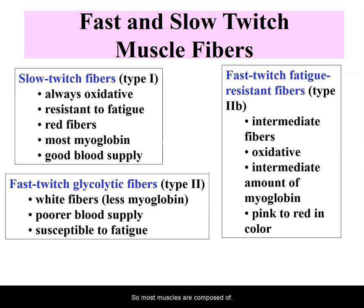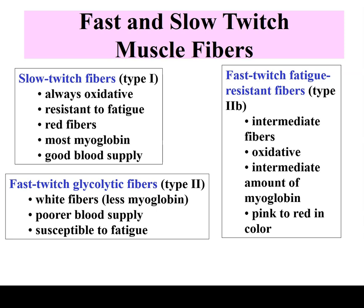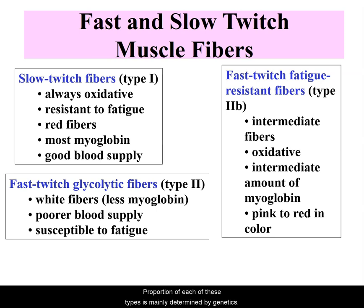Most muscles are composed of all three fiber types. All fibers in a motor unit will be of the same type. The proportion of each of these types is mainly determined by genetics.